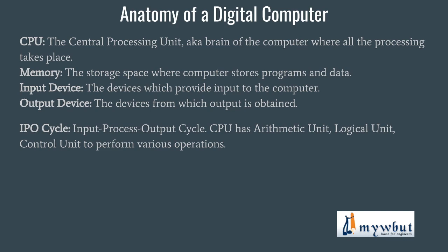Next is the IPO cycle — Input Process Output cycle — which runs from the point the computer is turned on until it is turned off. Whenever we provide input using the mouse, keyboard, joystick, or scanner, the computer must understand that input. Since the input we give is in human language, that is not understandable by the computer. So processing from human language to computer language takes place in the CPU, or in the OS which resides inside the CPU.